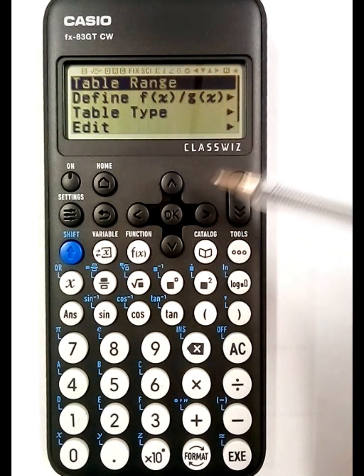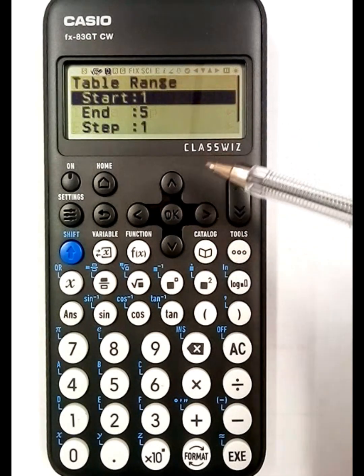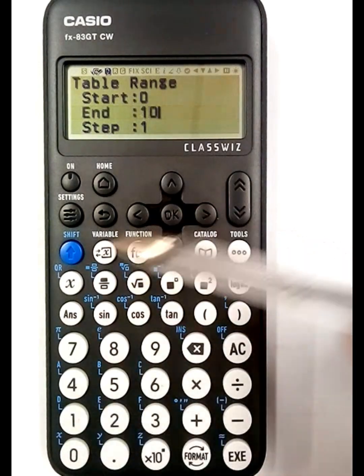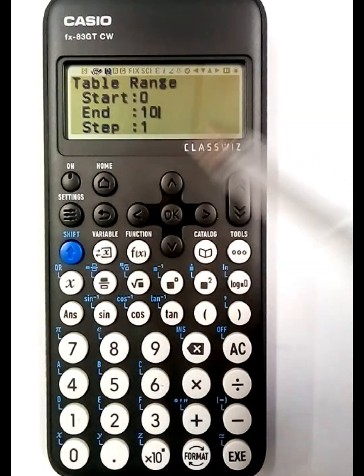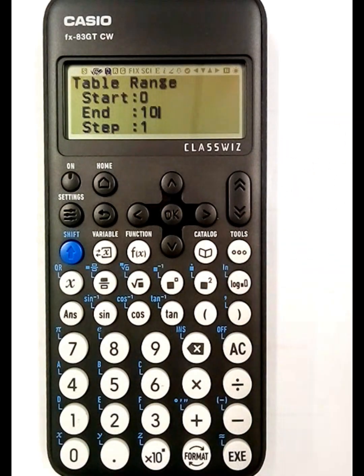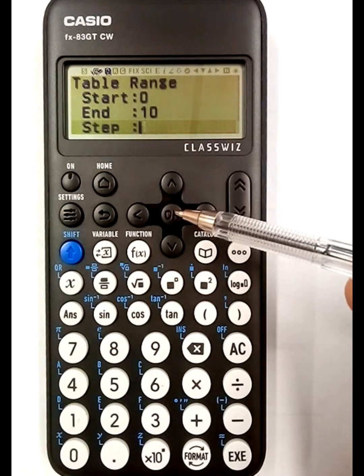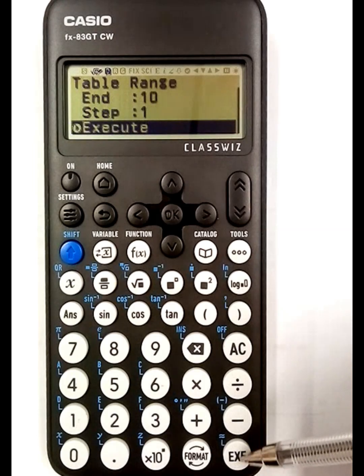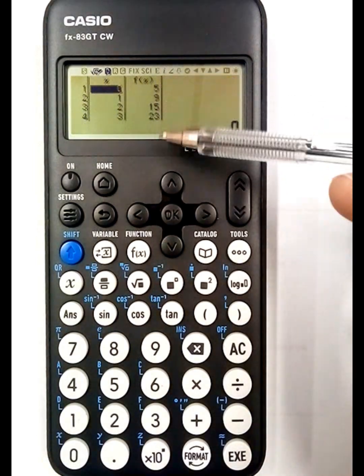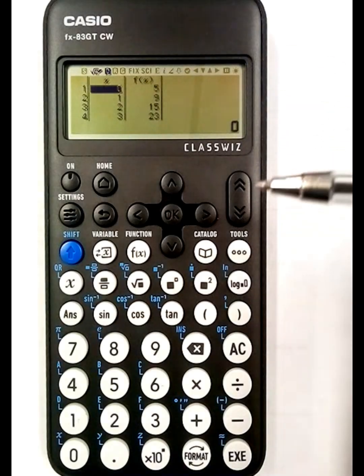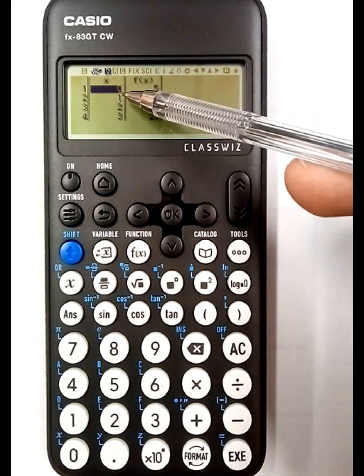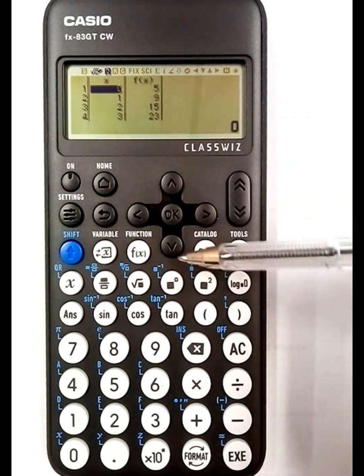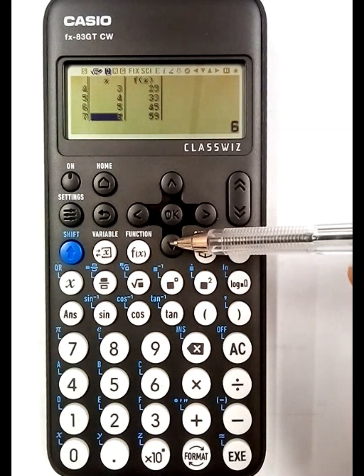So if you go to the three dots it'll ask you for the range. Let's say we go from 0 to 10 and we go up in one steps. So in other words we're only going to go once on the number line or on the graph. Step one, execute, and there you have it. It's done for you, simple as that.